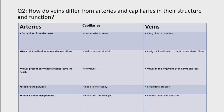Question 2: How do veins differ from arteries and capillaries in their structure and function? Arteries carry blood away from the heart, have thick walls of muscles and elastic fibers, valves present only where arteries leave the heart, blood flows in pulses, and blood is under high pressure. Capillaries link arteries to veins, walls are one cell thick, no valves, and blood flows steadily with changing pressure. Veins carry blood to the heart, have fairly thick walls with some elastic fibers, valves in the long veins of the arms and legs, blood flows steadily, and blood is under low pressure.